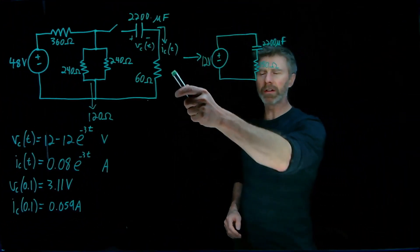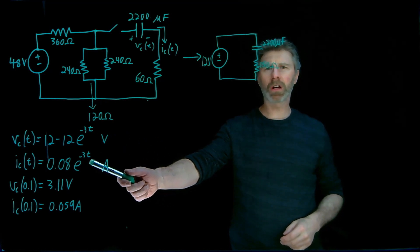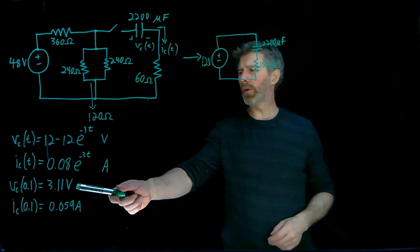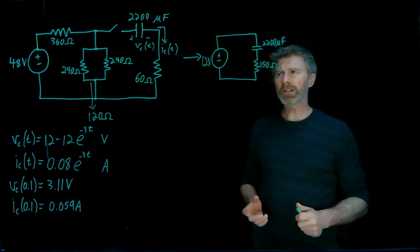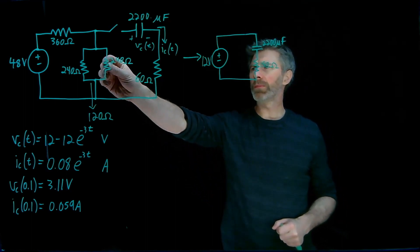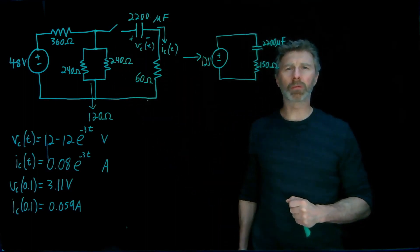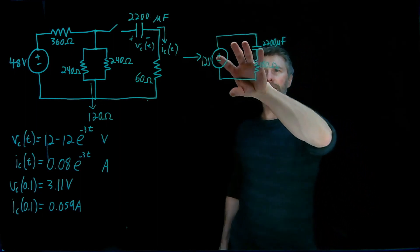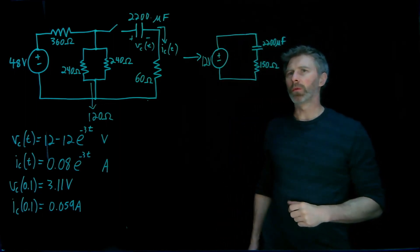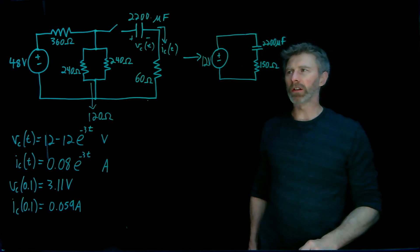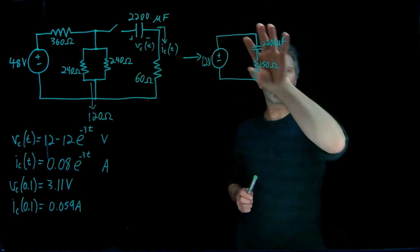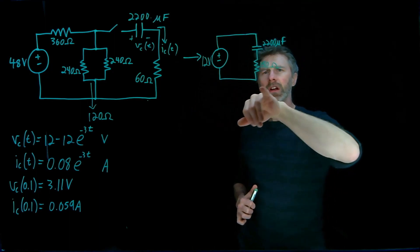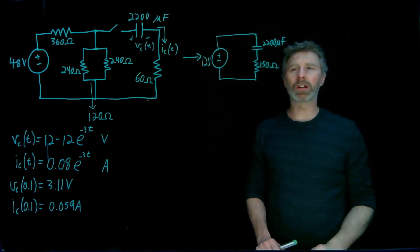So for this circuit, we figured out the voltage equation and the current equation for the capacitor. And we've also figured out the voltage at 0.1 seconds and the current at 0.1 seconds. Now, let's imagine that at 0.1 seconds, we pull out one of these 240 ohm resistors. Well, we're no longer left with an equivalent circuit that looks like this. We need to figure out what that equivalent circuit looks like and determine what's going to happen to the circuit when that resistor gets pulled out. So, when that resistor gets pulled out, the equivalent circuit will have this same format, except that the voltage and the resistance, we will have new Thevenin equivalents.